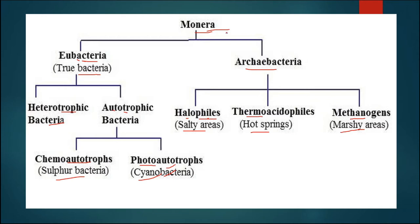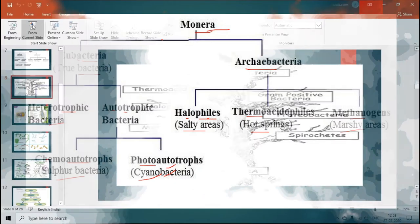In this way, kingdom Monera includes all organisms that are prokaryotic in nature and can live everywhere. That is why bacteria are known as omnipresent — they are cosmopolitan, living in all parts of the world: air, water, land, hot conditions, cold conditions — everywhere. Their habitat is everywhere and their mode of nutrition is of various types.